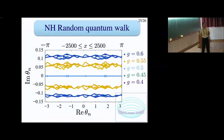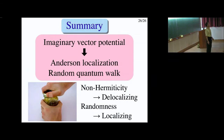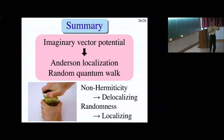To summarize: I introduced an imaginary vector potential instead of an imaginary scalar potential. With this imaginary vector potential applied to random localization problems, non-Hermiticity has a delocalizing effect while randomness has a localizing effect. They compete with each other, producing a localization-delocalization transition. This transition can be monitored by watching the spectrum: eigenvalues transition from real to complex. Thank you very much.